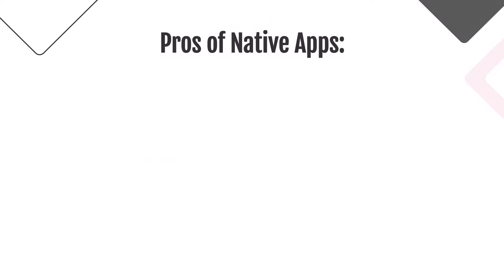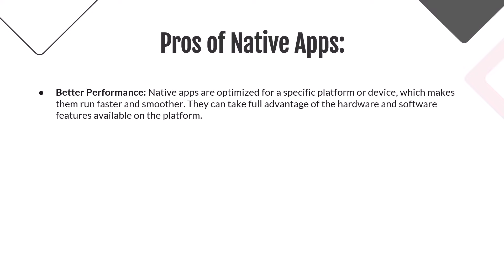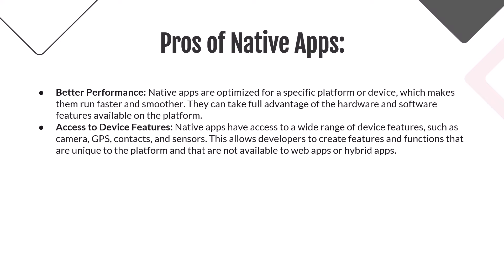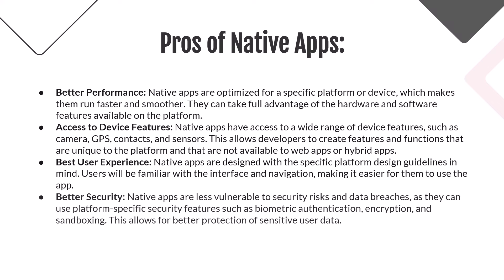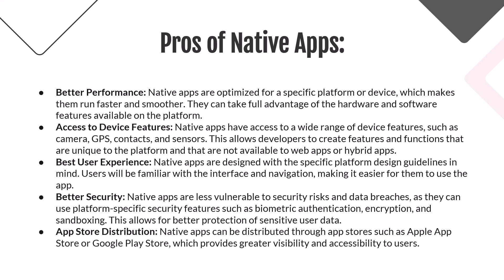The pros of native apps are: they are optimized for a specific platform or device, which makes them run faster and smoother. They can access a wide range of device features such as cameras, GPS, contacts, and sensors. They are designed with specific platform design guidelines in mind, so users will be familiar with the interface and navigation. Native apps are less vulnerable to security risks, as they can use platform-specific security features such as biometric authentication, encryption, and sandboxing. They can also be distributed through app stores such as the Apple App Store or Google Play Store, providing greater visibility and accessibility.